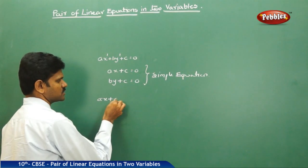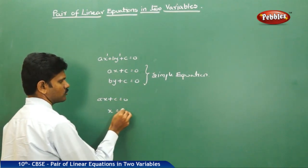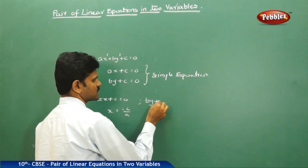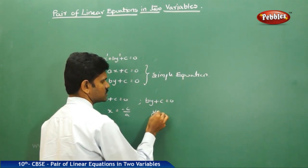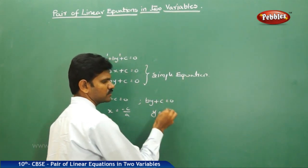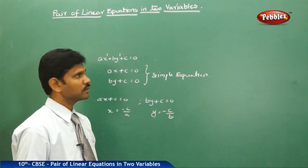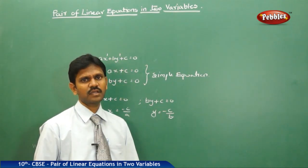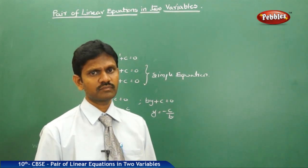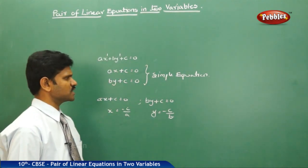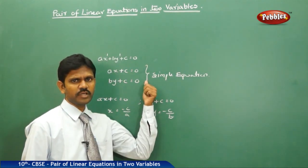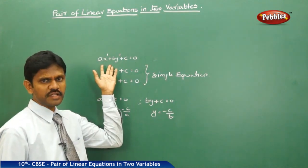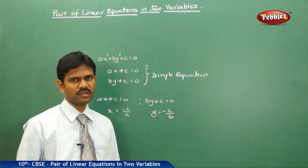For Ax plus C equals 0, x is equal to minus C by A. Or for By plus C equals 0, y is equal to minus C by B. A linear equation, on the other hand, has infinitely many solutions. So, a simple equation has a unique solution and a linear equation has infinitely many solutions.